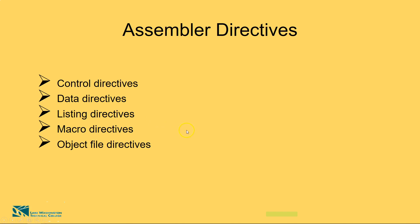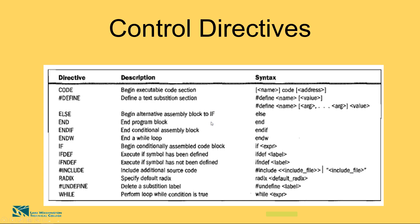Let's start with control directives. As you know, control directives control the conditional assembly code. Some of these directives are shown here: ELSE, ANDIF, ANDW, and IF. These describe what each directive means — for example, ELSE begins an alternative assembly block to IF, ENDIF ends the program block, and ANDIF controls a conditional assembly block. The third column shows the syntax for each directive.